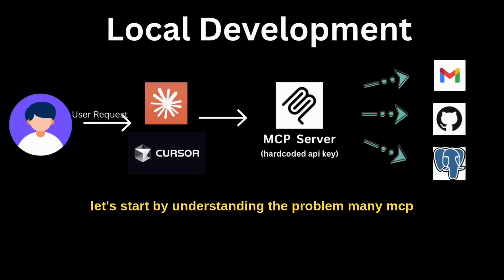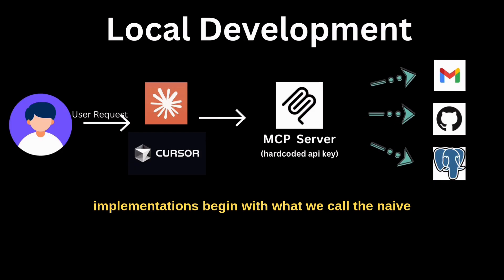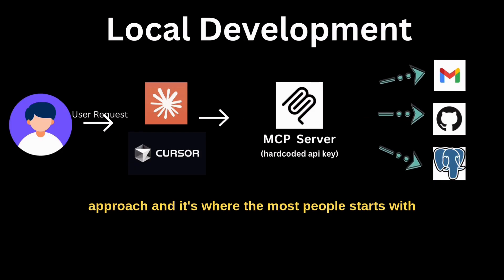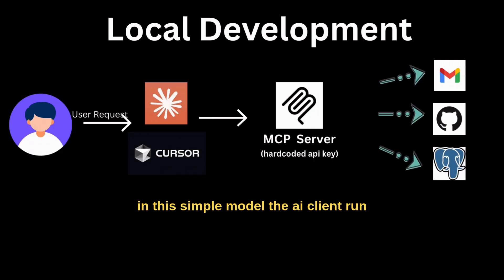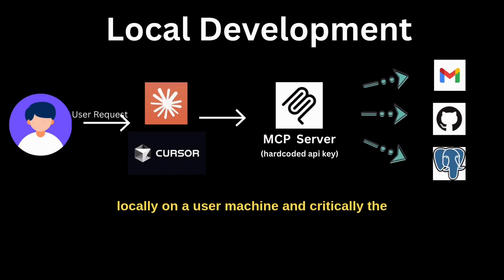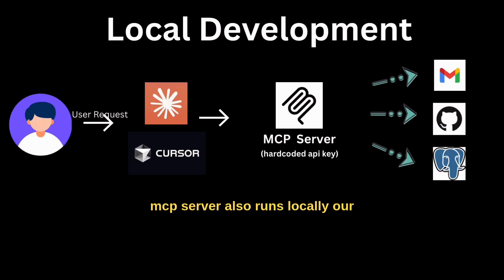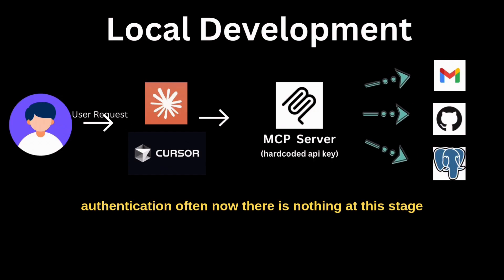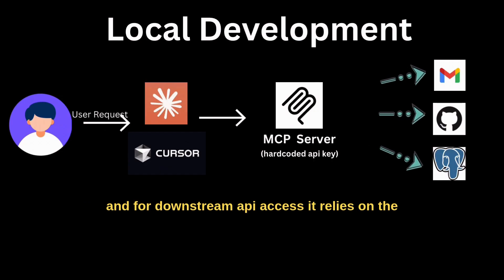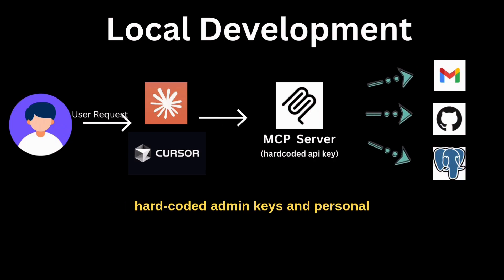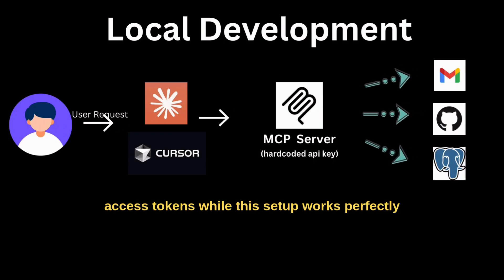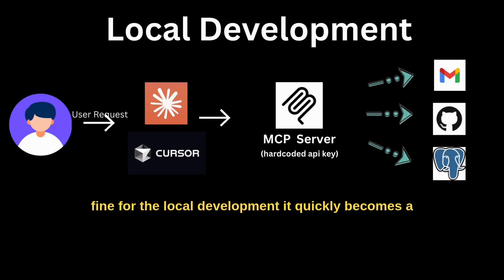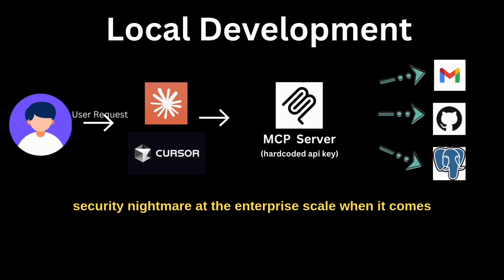Let's start by understanding the problem. Many MCP implementations begin with what we call the naive approach, and it's where most people start. In this simple model, the AI client runs locally on a user's machine, and critically, the MCP server also runs locally. There is no authentication at this stage, and for downstream API access, it relies on hard-coded admin keys and personal access tokens. While this setup works perfectly fine for local development, it quickly becomes a security nightmare at enterprise scale.